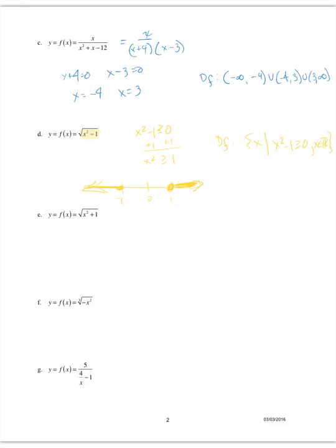For the next radical function, the root index is again 2, so we set the radicand greater than or equal to zero and get x² ≥ −1. This is always true — squaring any real number, whether positive, negative, or zero, always gives a result greater than −1. So the domain of this function is all real numbers.